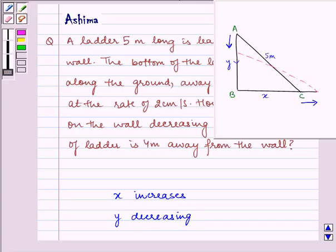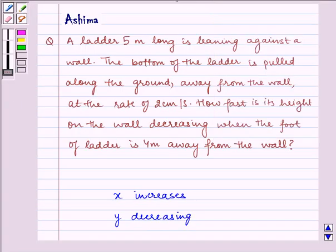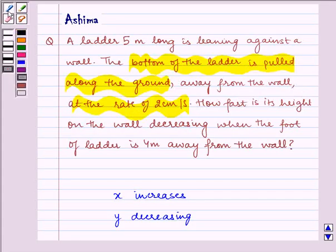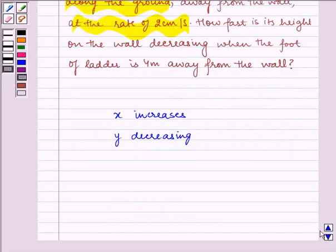It is given to us that the bottom of the ladder is pulled along the ground away from the wall at the rate of 2 cm per second. That is, dx/dt equals 2.